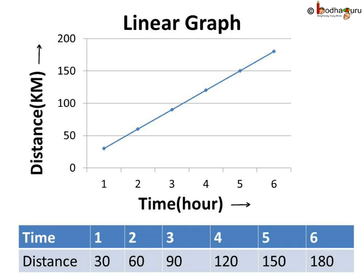But, we got a single straight line as all the points were collinear. This type of line graph is called a linear graph. So, now you know what is a linear graph too.